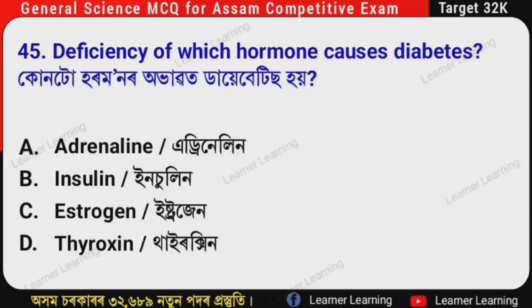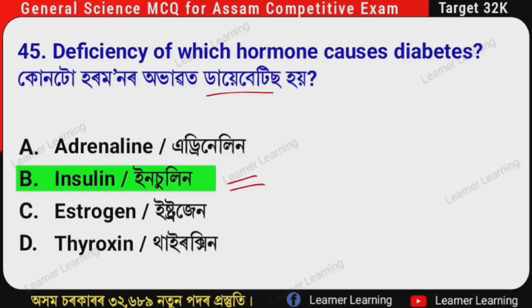Next question: Deficiency of which hormone causes diabetes? (Assamese: Konto hormonal ababot diabetes hai?) The correct option is Option B — Insulin. Deficiency of insulin causes diabetes.